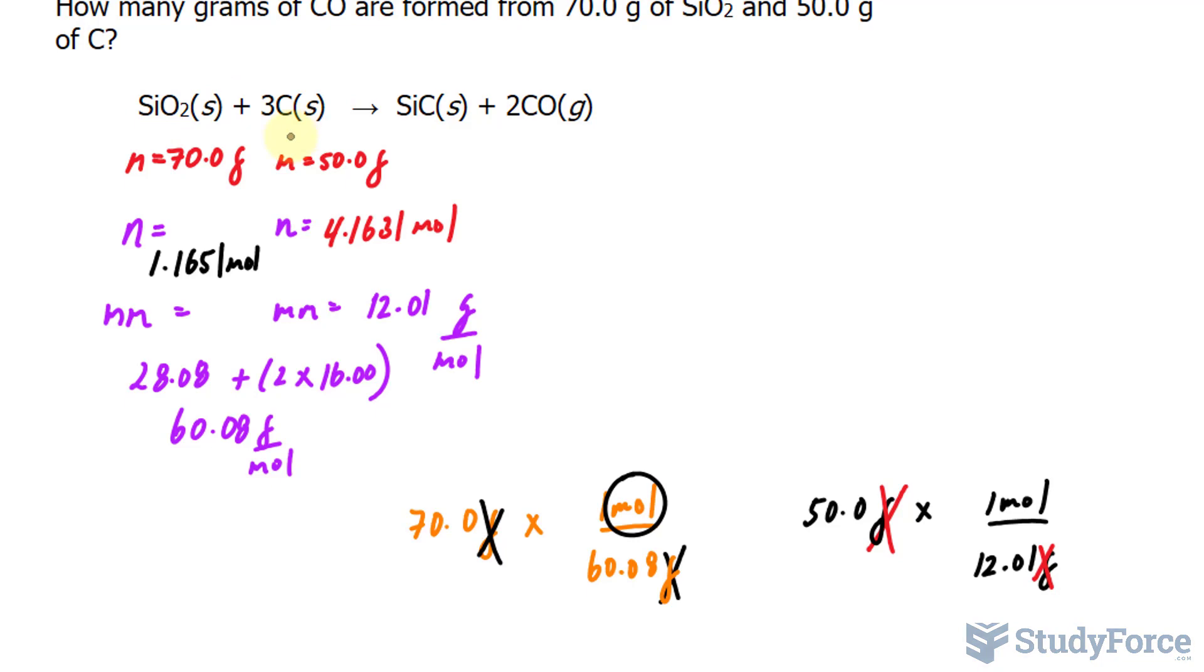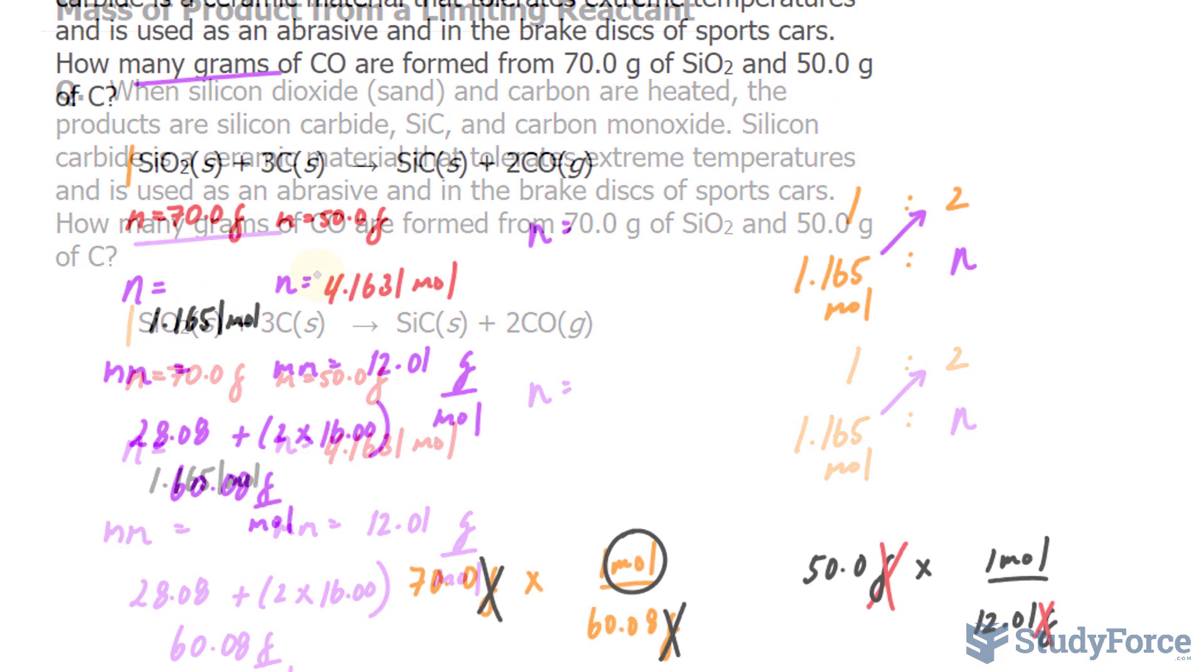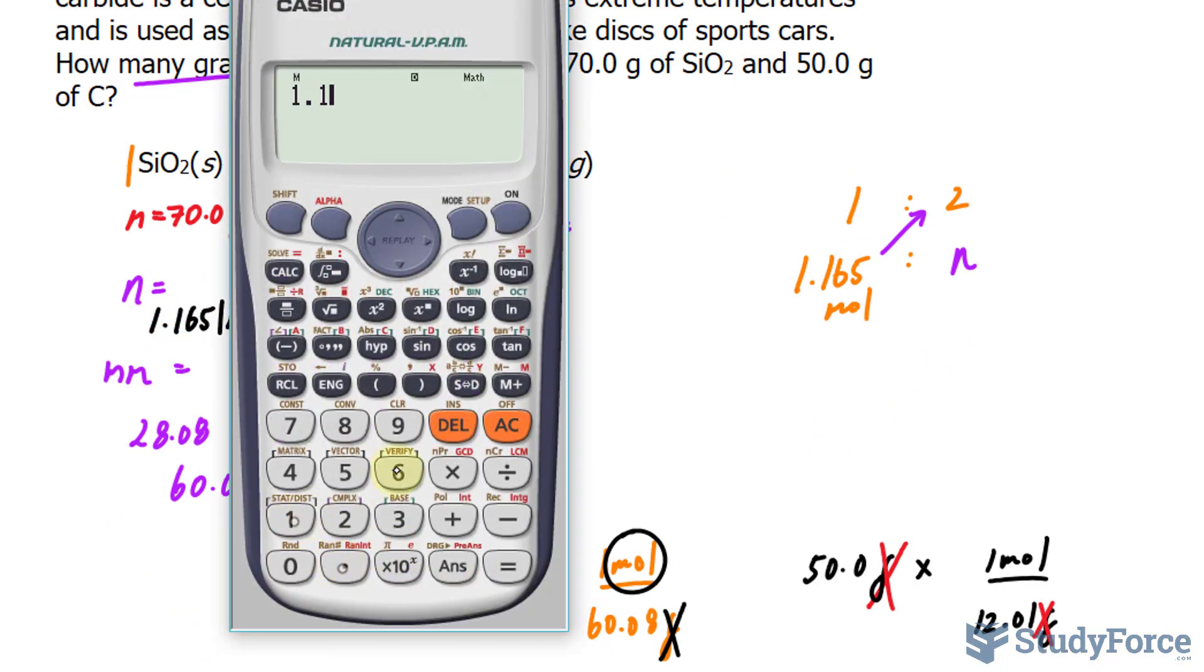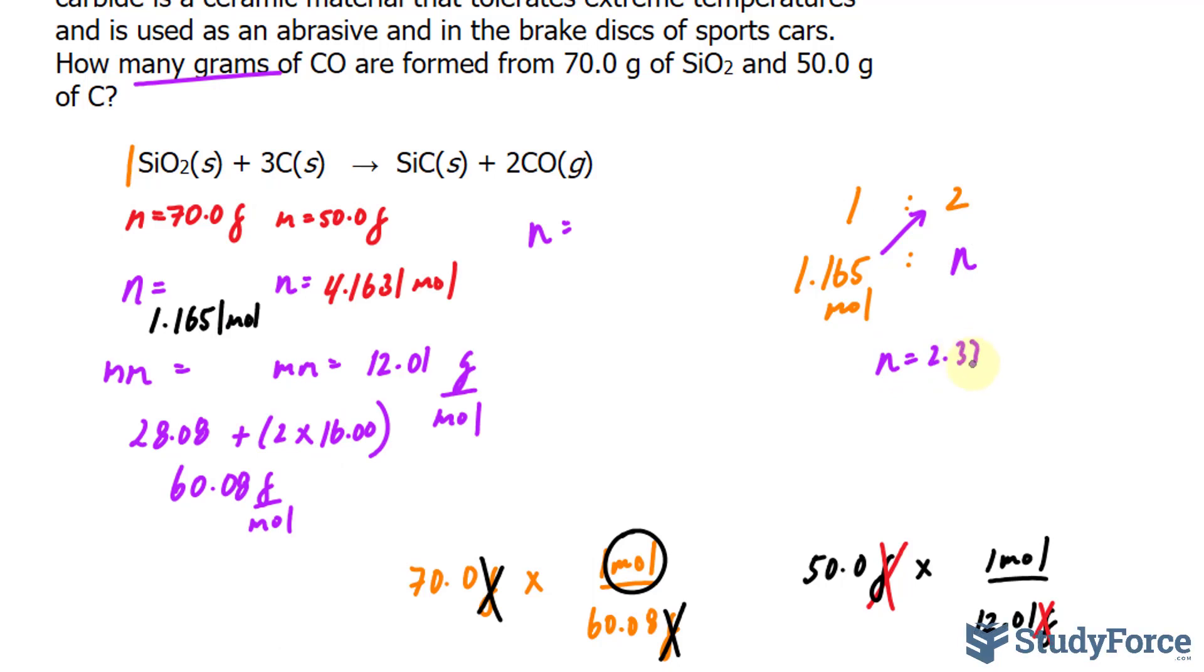Notice that I'm not rounding just yet. You don't want to round in the middle of the question. So we'll do a mole ratio for each of these reactants. We'll start with SiO2 for no particular reason. It's a 1 to 2 ratio. So we found that it was 1.165 moles, and we want to find the equivalent for CO. So we'll cross-multiply. This is how you solve a proportion. I'll call this right here N, because that's what we're looking for. So 1.165 times 2, that's equal to 2.33, and N times 1 is equal to N. We end up with an N value of 2.33 moles.